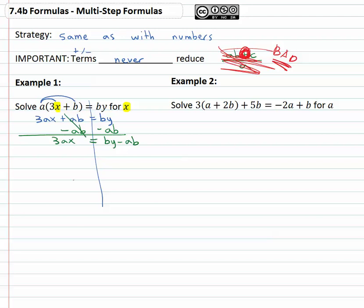And then finally to get the x alone that we're looking for, it's multiplied by 3a, so we get rid of it by dividing both sides by 3a. The 3's and the a's divide out and the x is finally alone like we want. It's equal to an ugly fraction, but that's okay, by minus ab over 3a for our final solution.